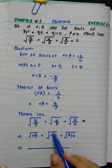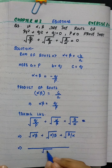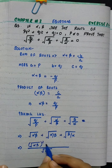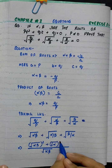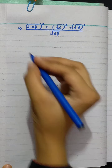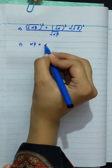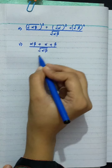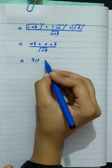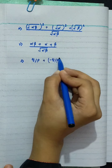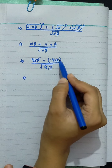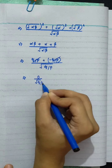Taking LCM of √α and √β, we get a common denominator of √(αβ). The numerator becomes √(αβ)·√(αβ) + √α·√α + √β·√β, which simplifies to αβ + α + β, that is (α + β) + αβ. Substituting, the numerator gives α + β + q/p over √(q/p).